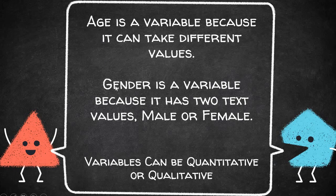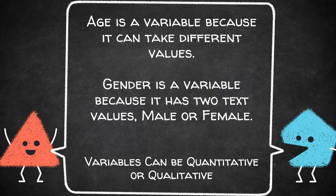There are other categories of variables which are called qualitative variables. For example, gender is a variable because it has two text values — a person could be a male or could be a female. So gender is a variable.